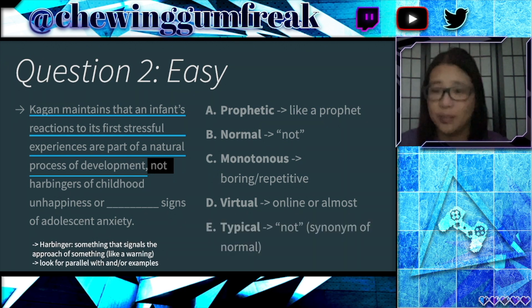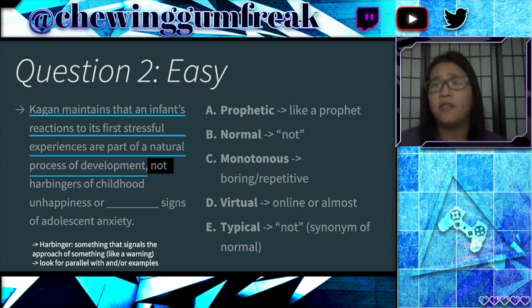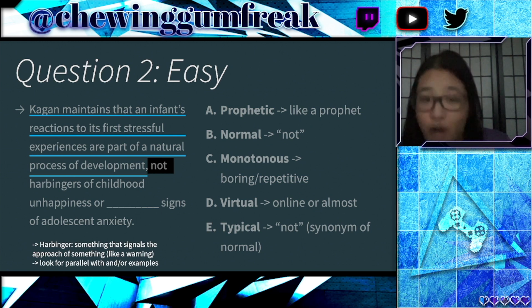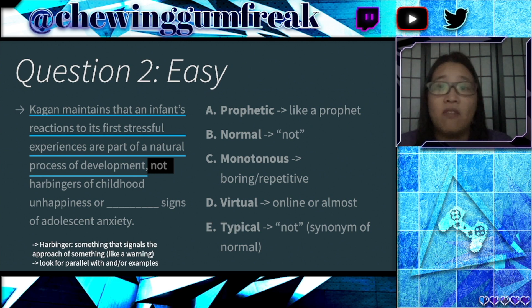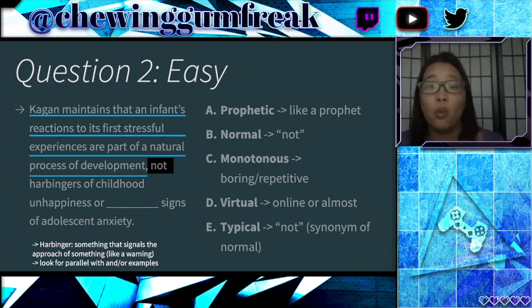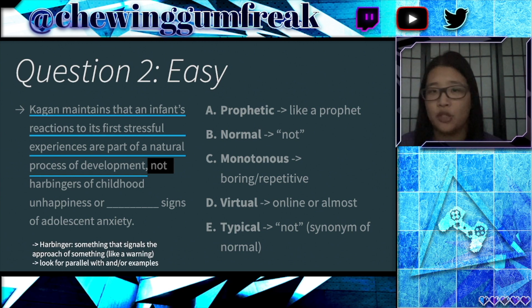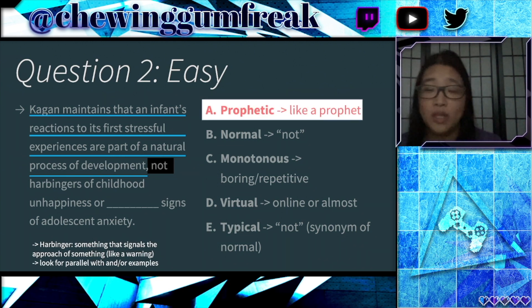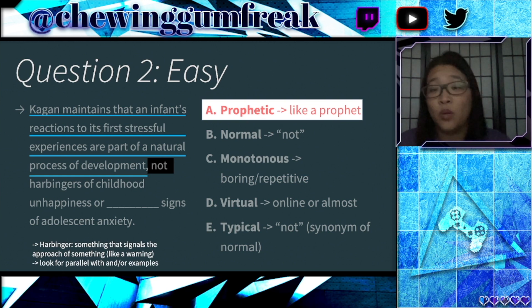That leaves Choice E, 'typical.' Typical is also negated by 'not' in the sentence. Note that 'normal' and 'typical' are very similar words — they're synonyms — so you can cross both out since you can only choose one answer. The correct answer is A, 'prophetic,' basically meaning it's a prophecy that this infant is going to have adolescent anxiety — which it's not. So A makes sense as the correct word for the blank.